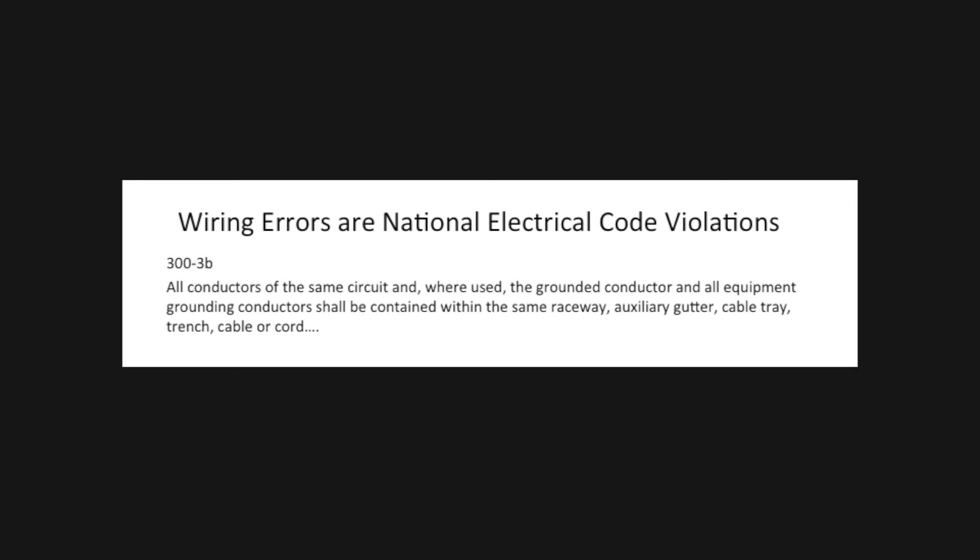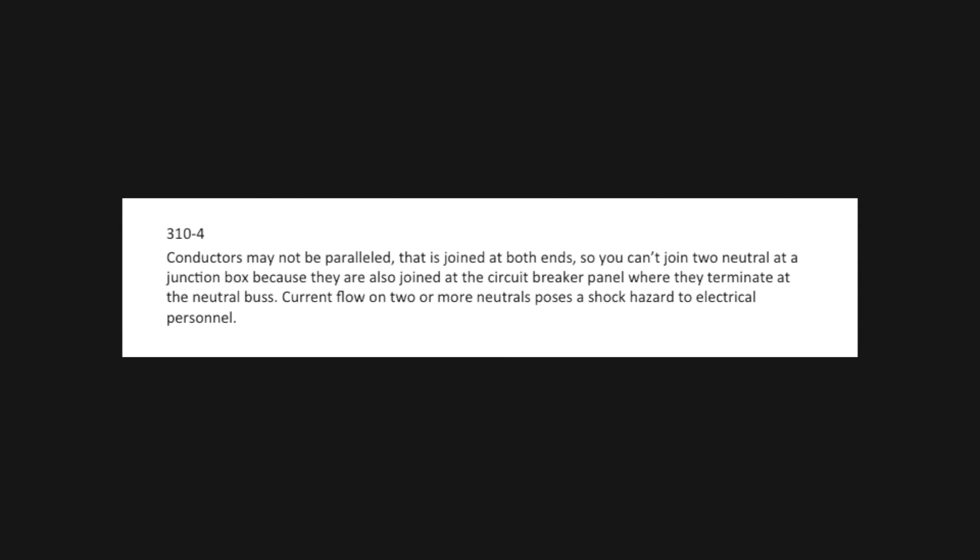The code citation is 300-3b, which states all conductors of the same circuit, and where used, the grounded conductor and all equipment grounding conductors, shall be contained within the same raceway, auxiliary gutter, cable tray, trench, cable, or cord. NEC 310-4 states conductors may not be paralleled — that is, joined at both ends — so you can't join two neutrals at a junction box because they are also joined at the circuit breaker panel at the neutral bus. Current flow on two or more neutrals poses a shock hazard, and the magnetic field generated will cause disruption of sensitive electronic equipment like computer servers.